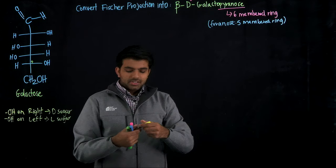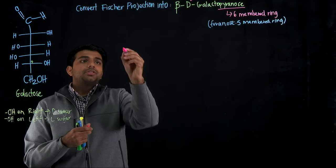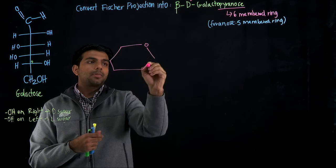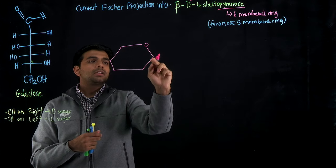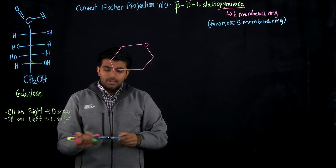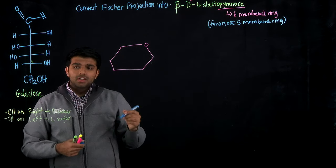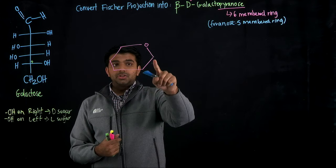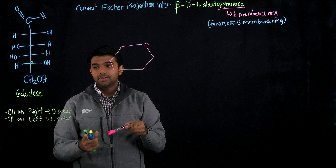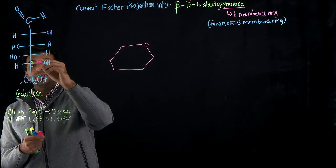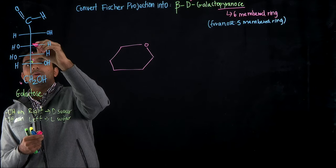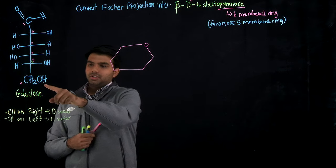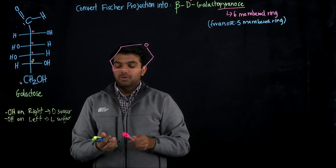Since we know it's going to be a six-membered ring, I'll start off with a traditional six-membered ring with the oxygen in the upper right-hand corner. Then I'm going to start numbering the carbons. If you're already comfortable with this you don't need to number it, but to show where all the substituents go, I'll number them: six, five, four, three, two, and one. Remember the oxygen is part of the ring but is not numbered.